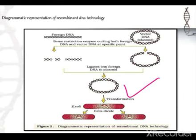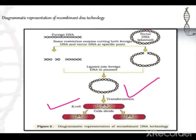We need multiple copies of the rDNA. Now the rDNA undergoes transformation — we insert it into E. coli as a host. When the E. coli divides, the rDNA is also divided and replicated, so the rDNA also multiplies and develops into multiple copies.